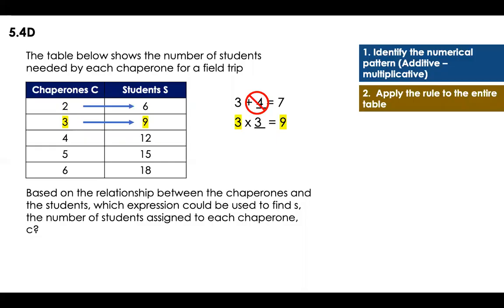That means that I have to do three times three is equal to nine. That means that now I just have to continue using the same rule. Four times three is 12. Five times three is 15. Six times three is 18.